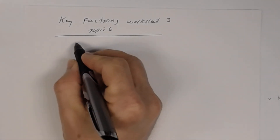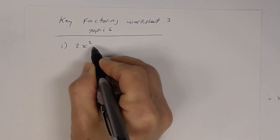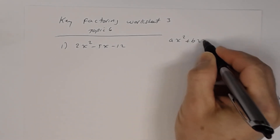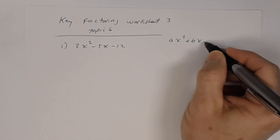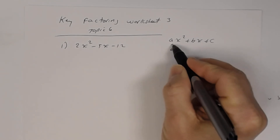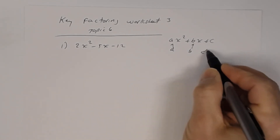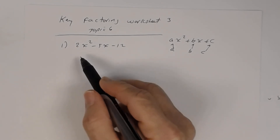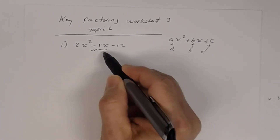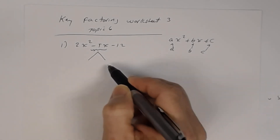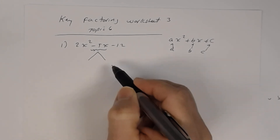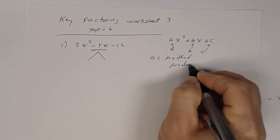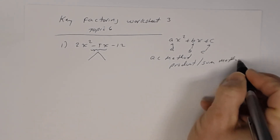Alright, let's look at number one. We have 2x squared minus 5x minus 3, and we're going to use the AC method. Remember, for a quadratic ax squared plus bx plus c, 'a' is the coefficient of x squared, 'b' is the coefficient of x, and 'c' is your constant. The AC method is also called the product-sum method.